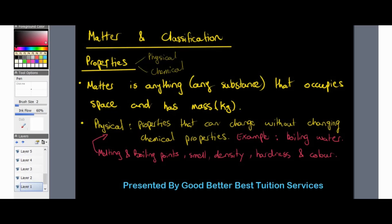We know that matter consists of physical as well as chemical states. There are two different states — physical and chemical. Our definition of matter, which we should already be familiar with, is that matter is anything or any substance that occupies space and has mass, and we know that mass is measured in kilograms.